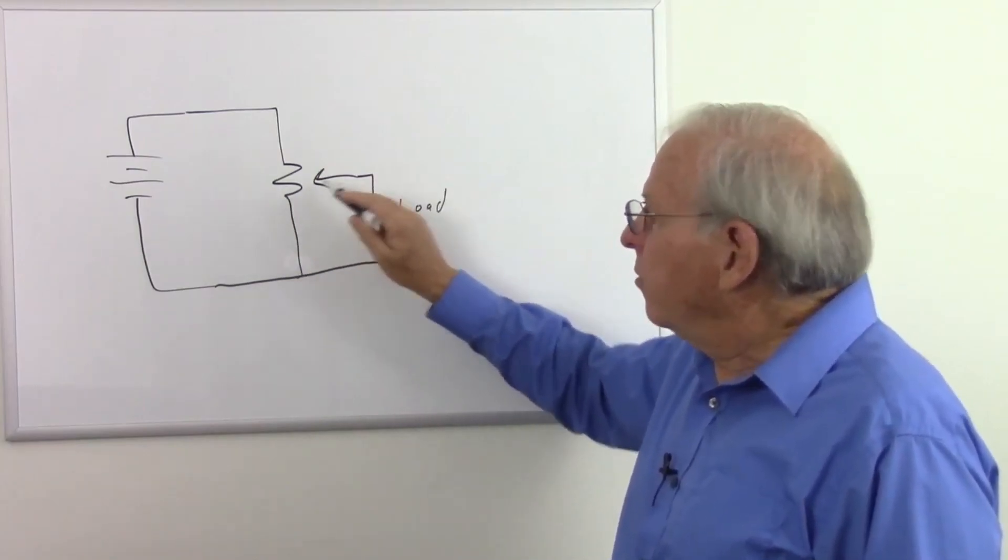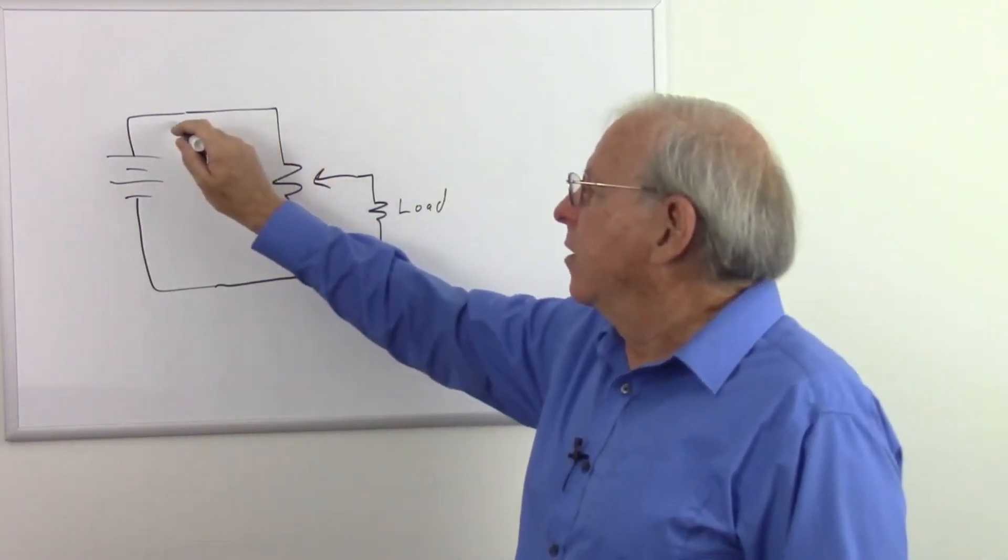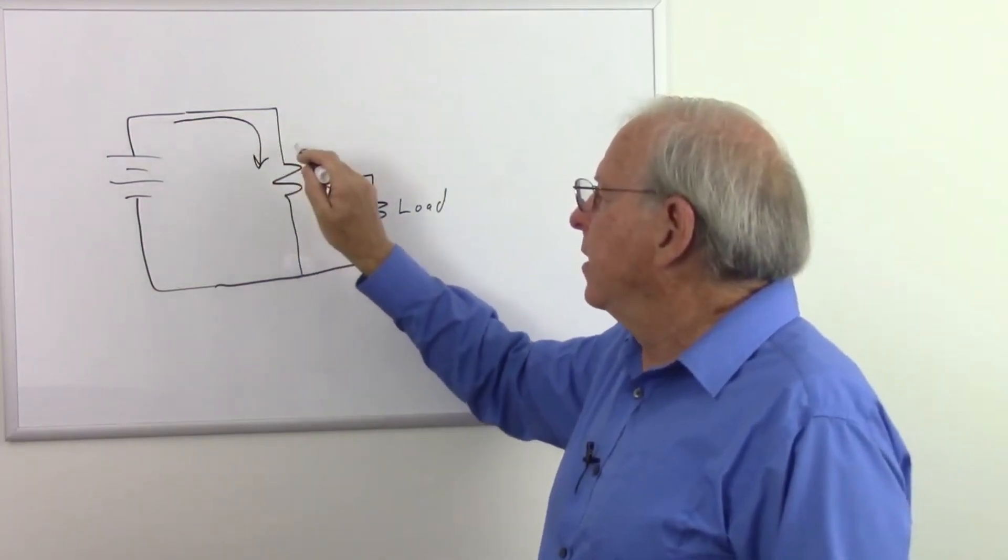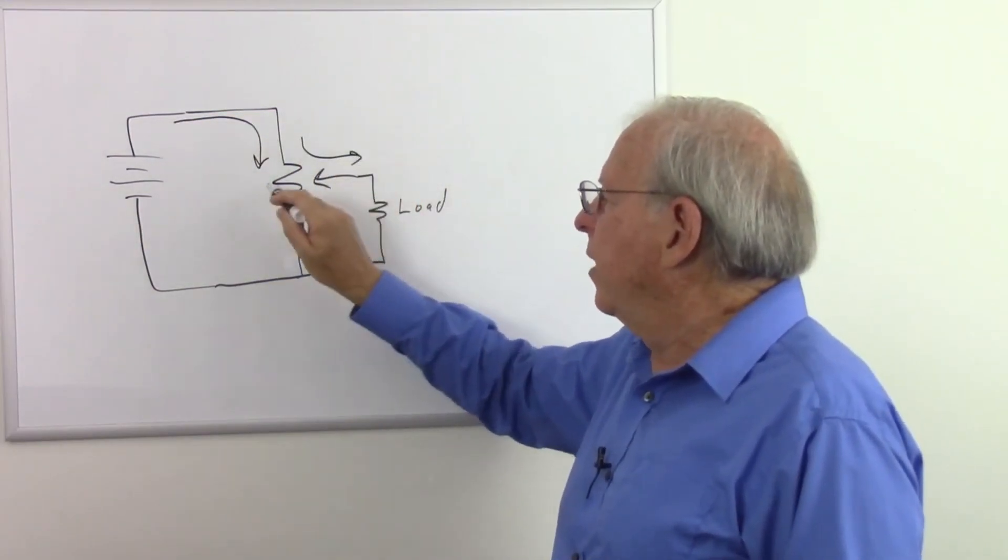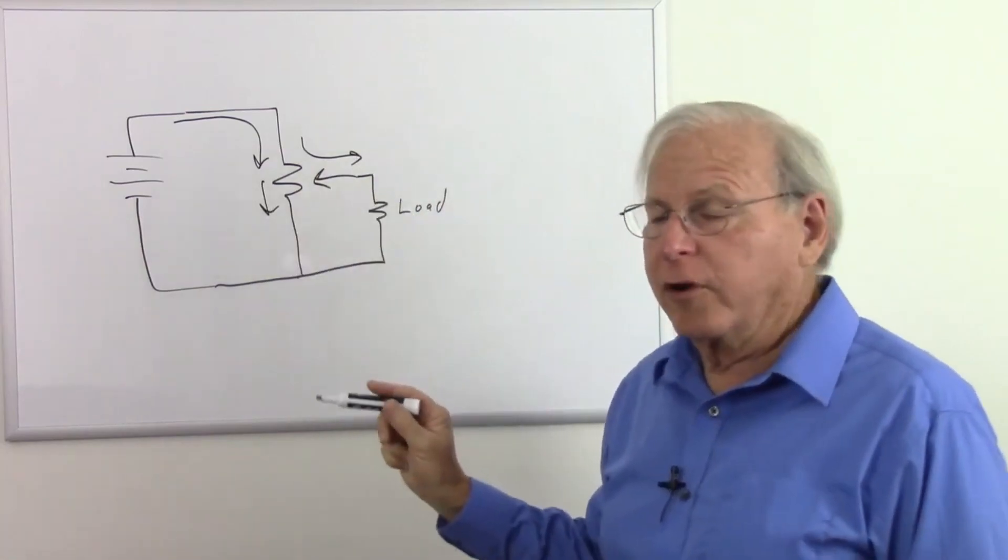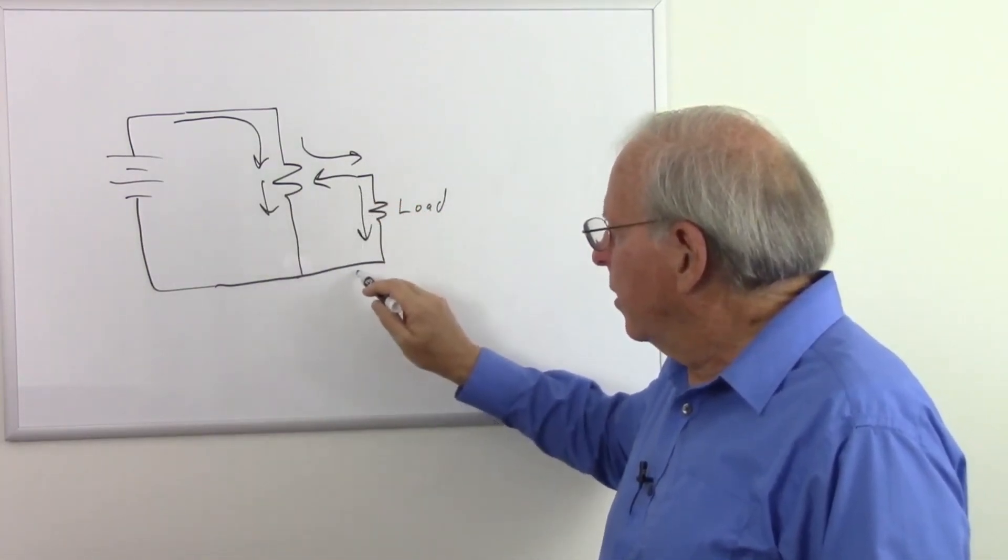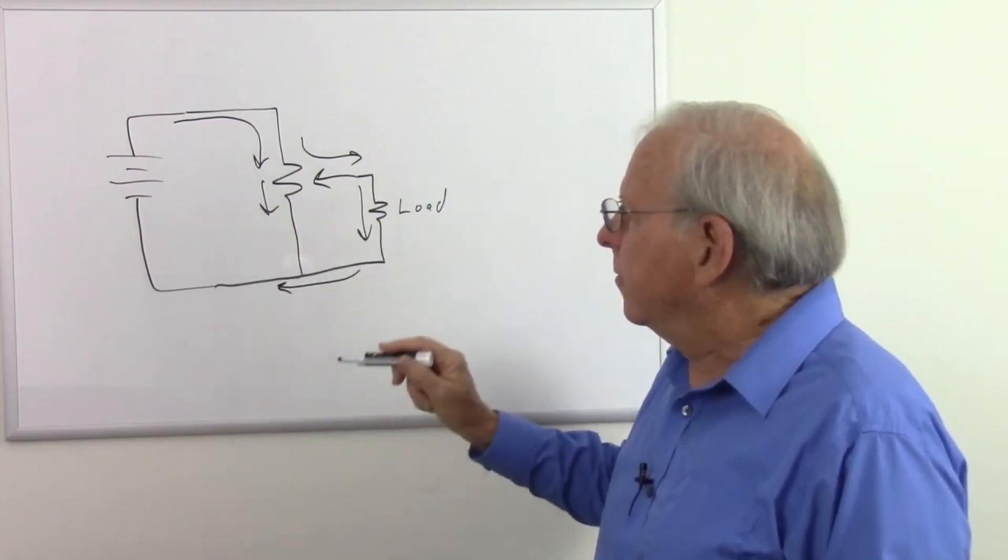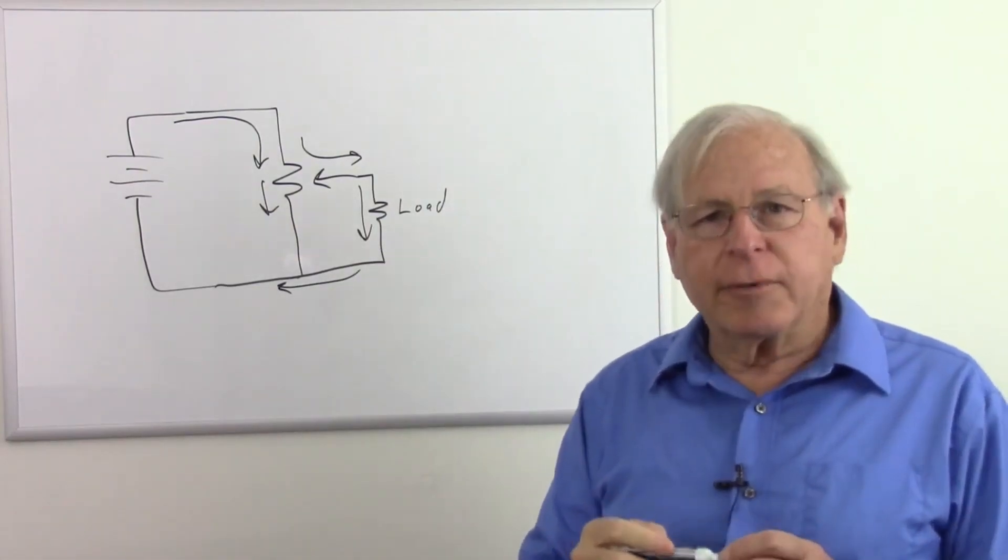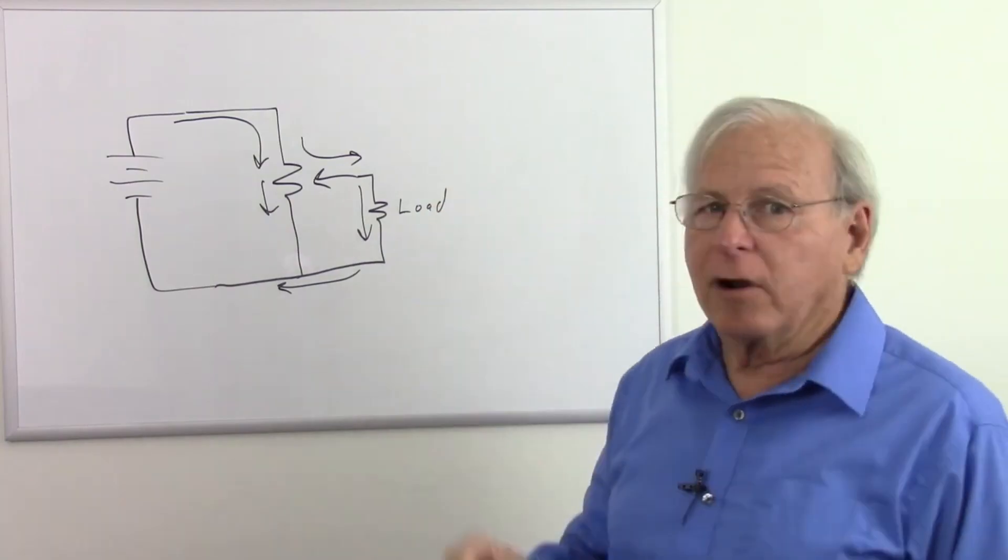And notice at this point, we do have a parallel circuit. We have a series circuit up to this point, but then the current can split either this way or that way. So there's two possible current paths. So now we have a parallel circuit. And of course, they come back at this point.